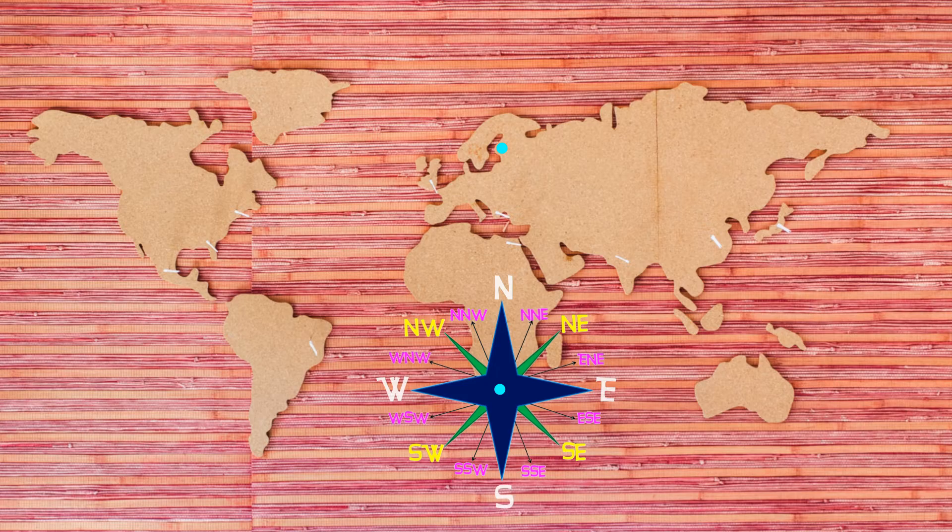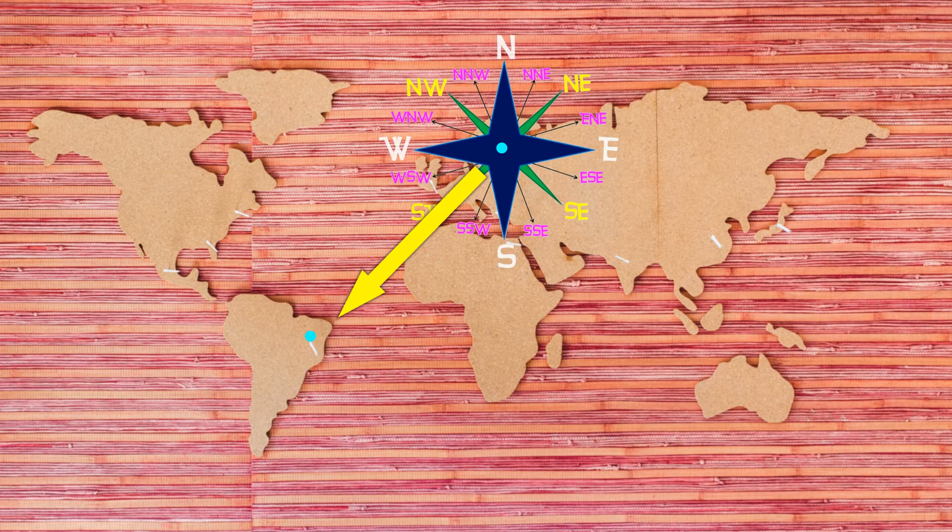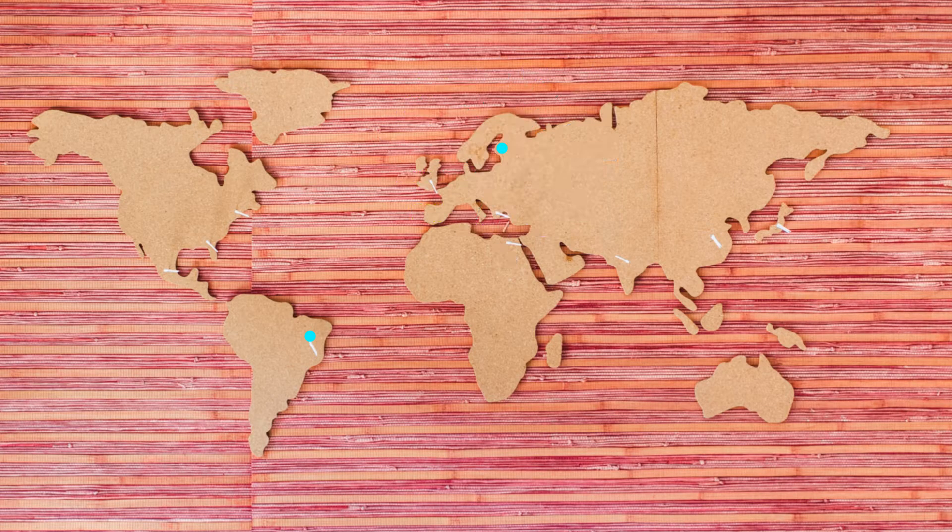Let's do another example. Now you are in Finland and you want to travel to Brazil or fly straight to Brazil. In which direction would you fly from Finland to Brazil? If you want to work it out yourself, pause the video and try to figure it out. Now, the direction in which we would fly is southwest or a southwesterly direction.